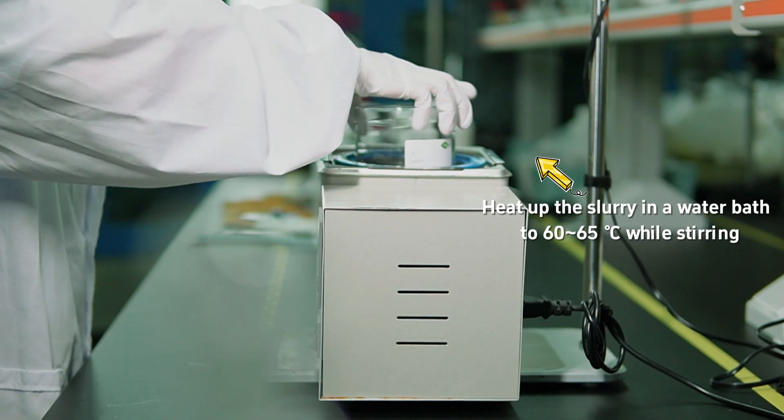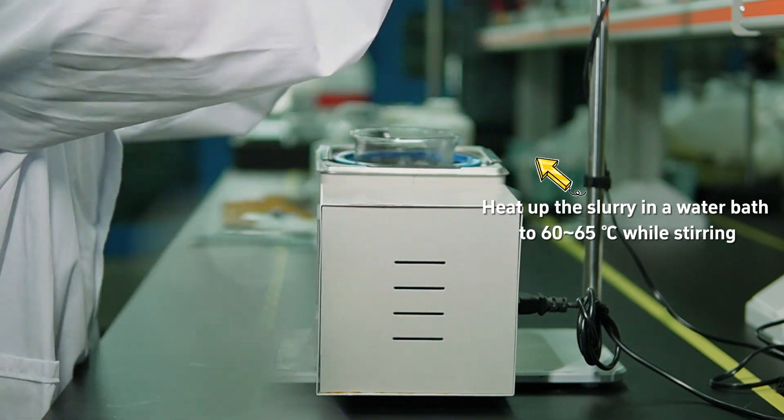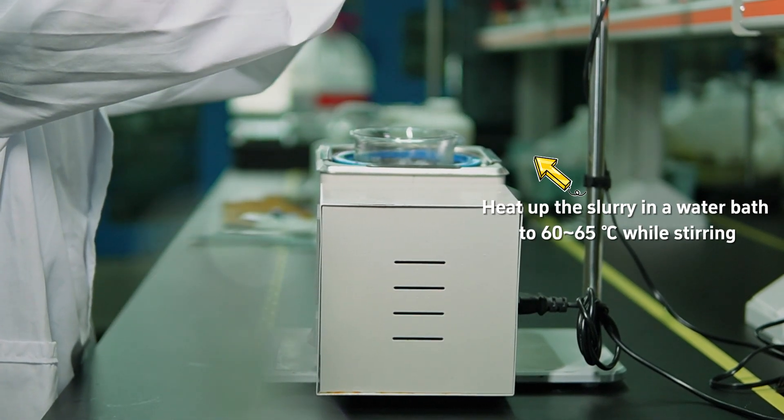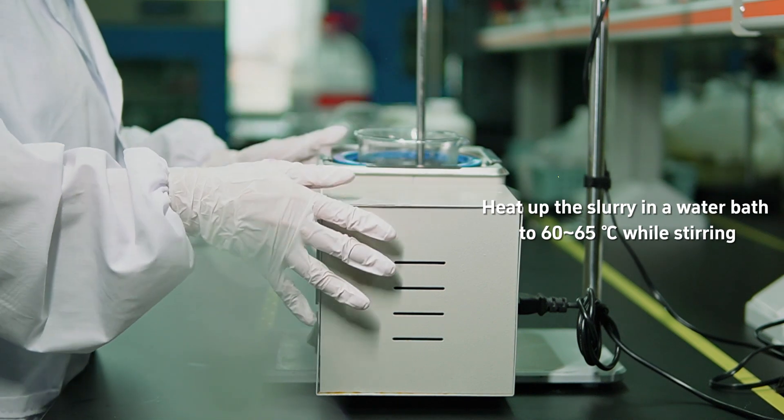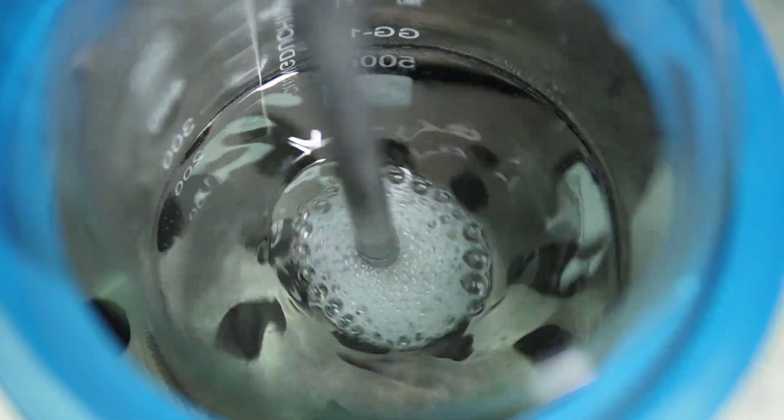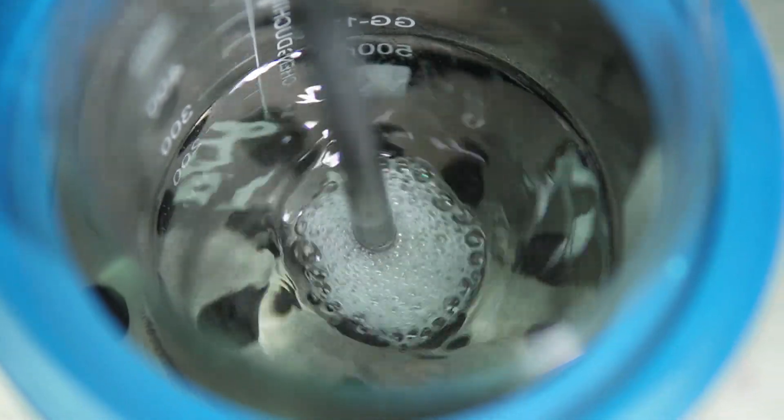After adding the SLES, the next step involves some heat. We place our beaker in a water bath, raising the temperature to between 60 and 65 degrees Celsius. This is essential because SLES in its gel form doesn't dissolve easily in water. As we heat it, we keep stirring until the mixture becomes completely transparent, which implies that SLES is fully dissolved.